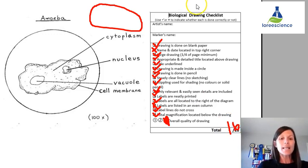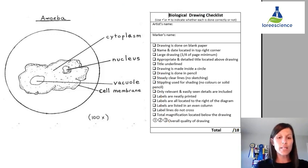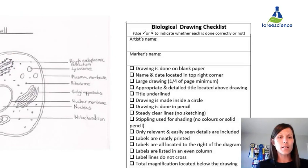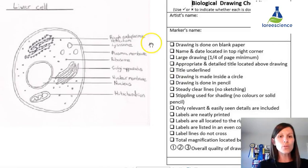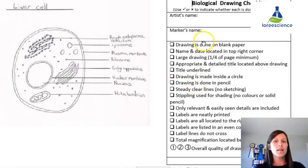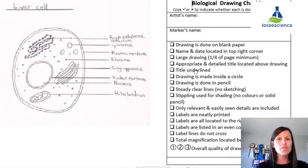Now if you wanted to take a look at a second drawing, here is an example of a liver cell that was drawn. I would like you to pause the video, go through the biological checklist and see what score you would give this person. Because you will have to peer assess and self-assess some of your own biological drawing so it's good practice. So pause the video now and see what score this person would get out of 18 on this liver cell drawing.